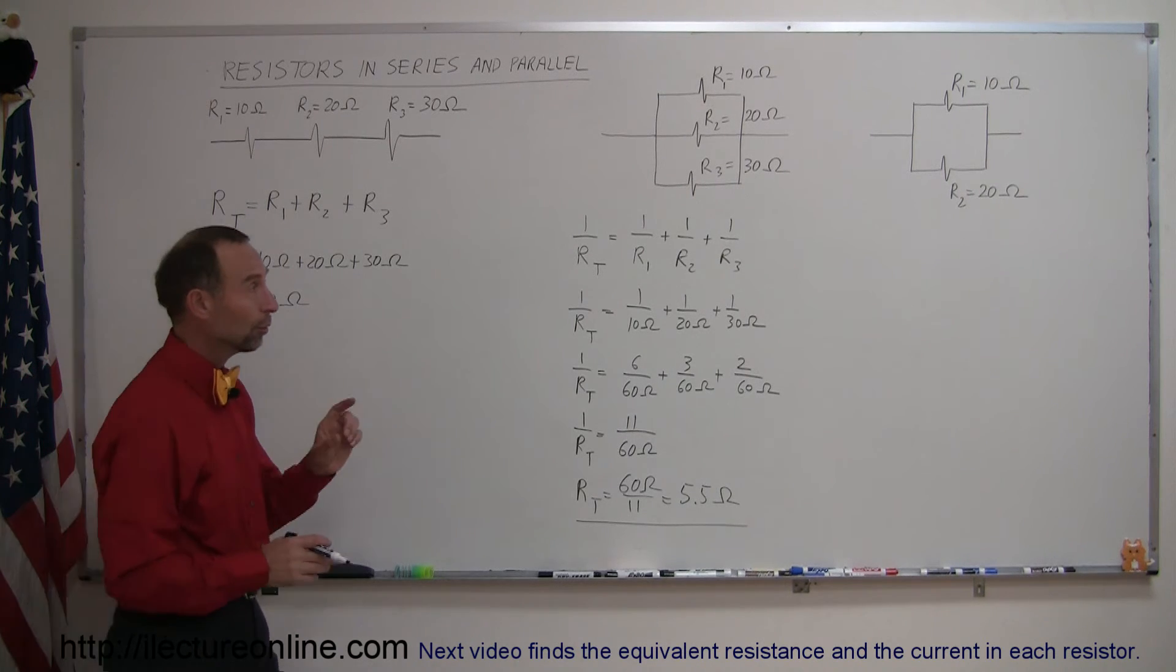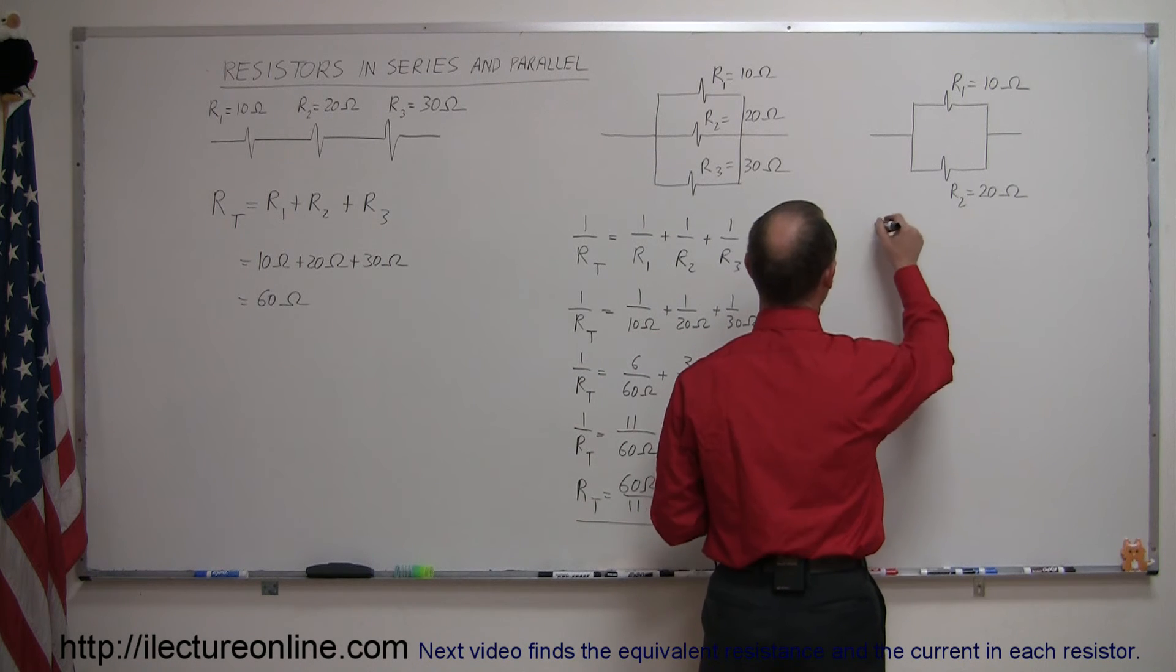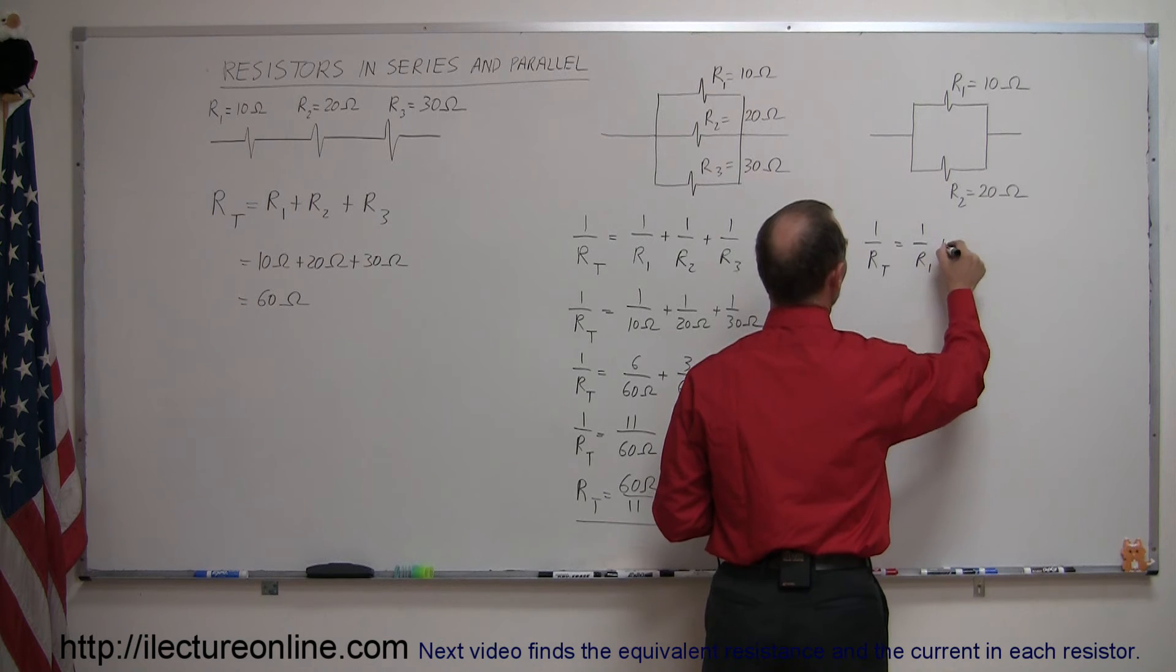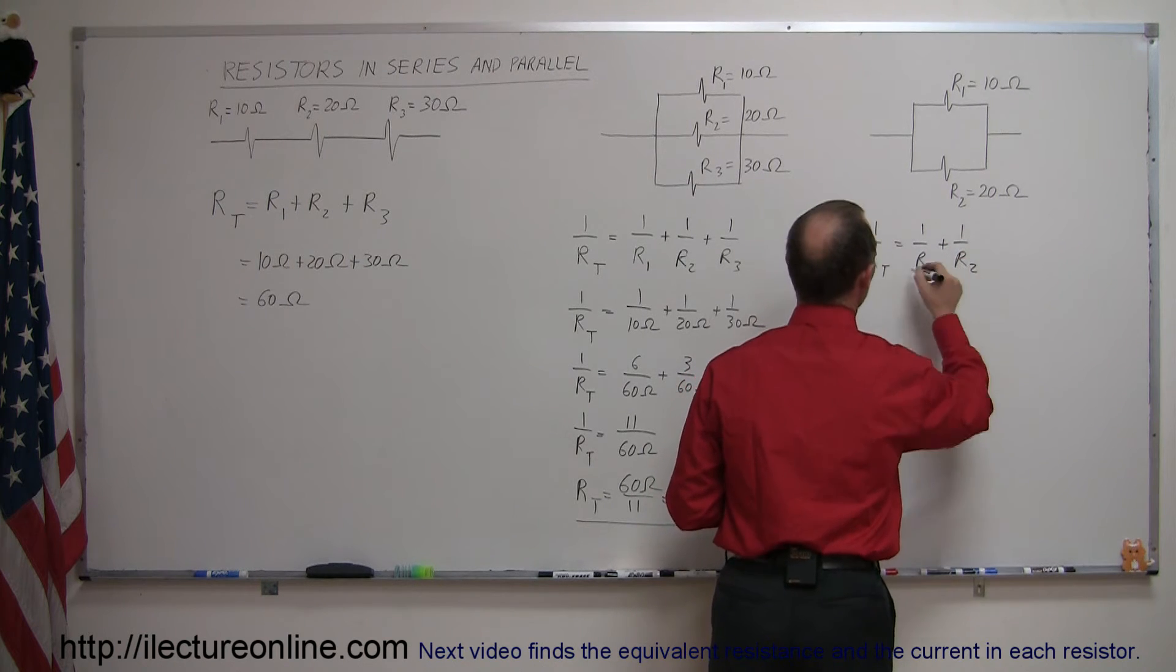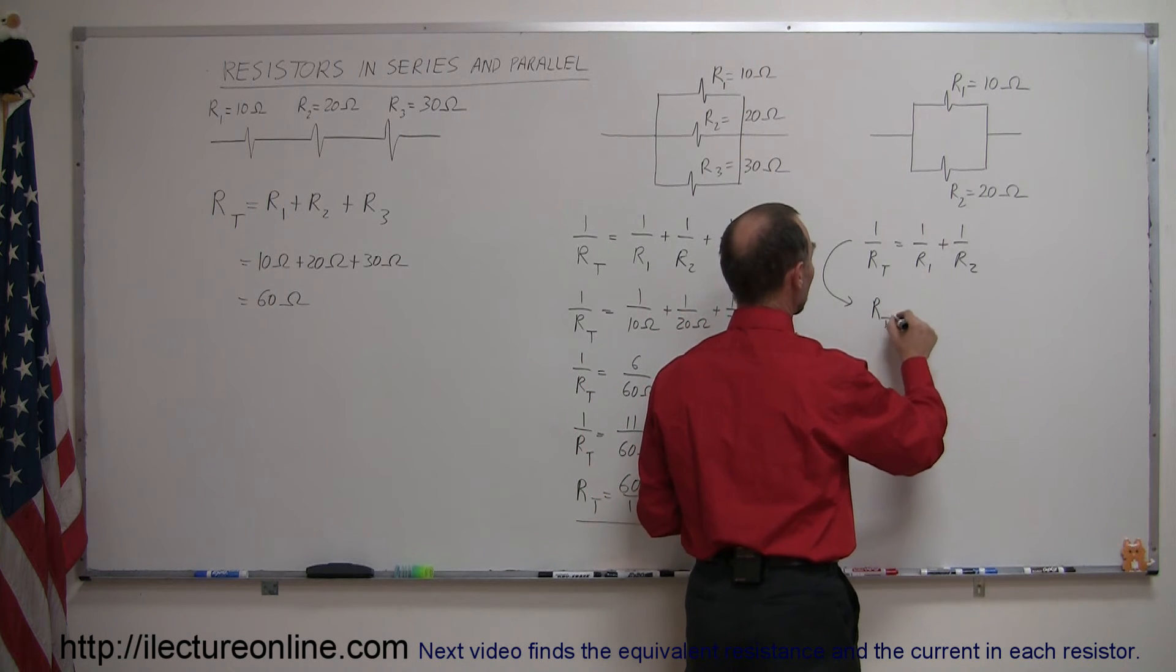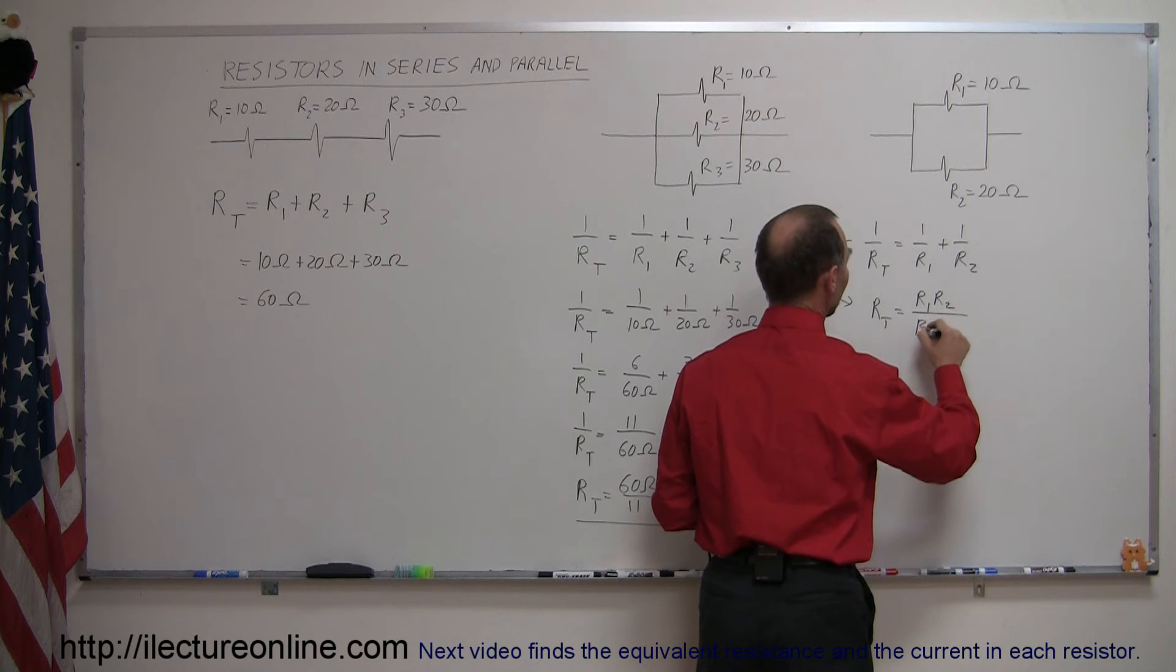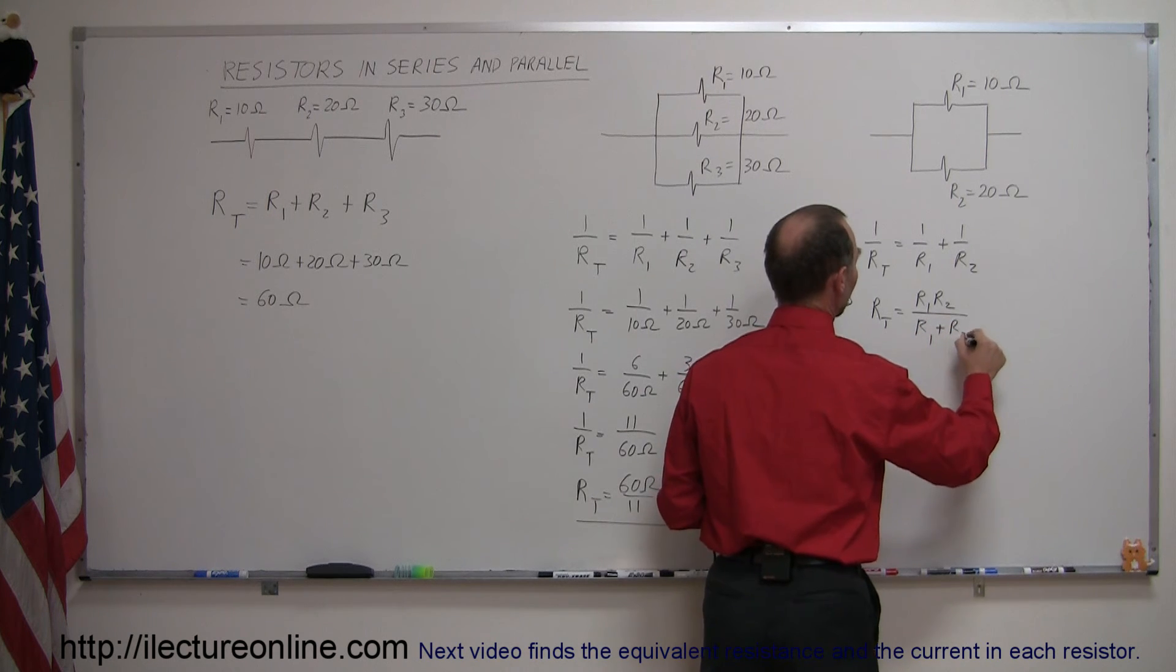Now when there's only two of them like this, it's actually a bit easier. We can say that again, 1 over R total is equal to 1 over R1 plus 1 over R2. But if we algebraically solve this for R total, you find that R total then can be written as the product R1 times R2 divided by the sum R1 plus R2. So we call that the product over the sum rule.